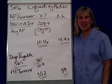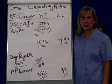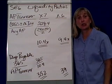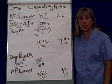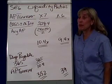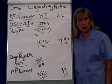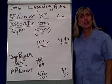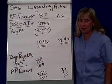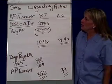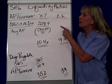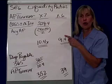In financial accounting, we're talking about financial performance — specifically the liquidity ratios, and in particular those that have to do with accounts payable. How fast do we pay our bills? So the first one we want to do is accounts payable turnover.